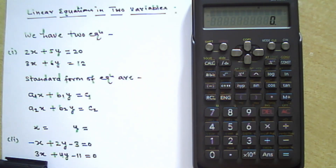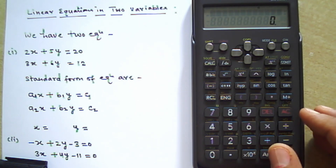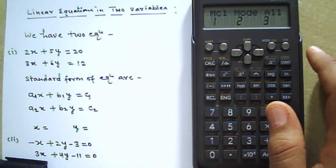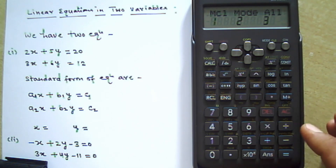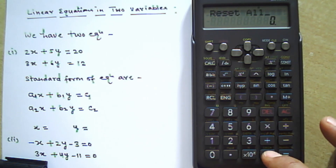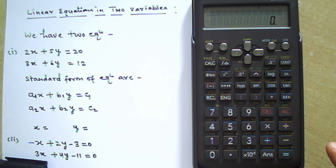You should always reset the memory of the calculator before using it for any calculation. For resetting the memory, press the Shift button, then Mode. There are three options — press 3 to reset all. Then press equal sign twice: press 1, then 2. Now your calculator is ready and all values are reset.